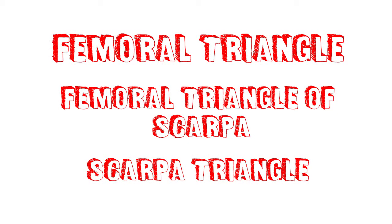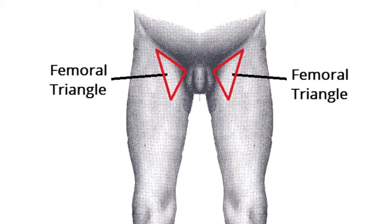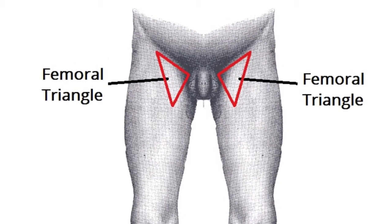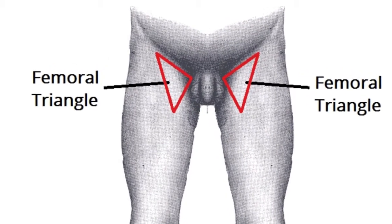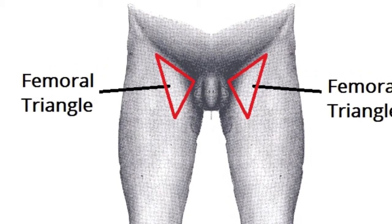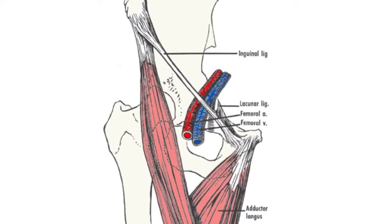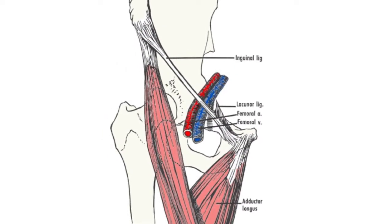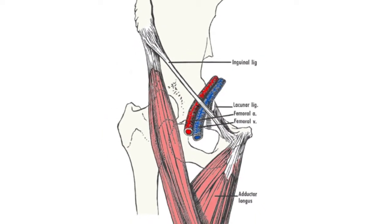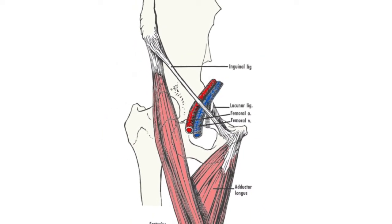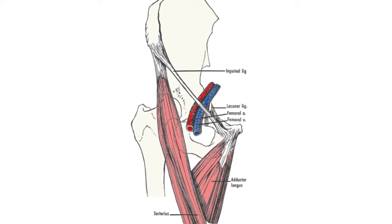The femoral triangle is also known as the femoral triangle of Scarpa, or Scarpa's triangle. It is a subfascial space located at the upper inner thigh, appearing as a triangular depression which lies inferior to the inguinal ligament.